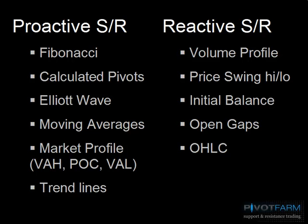At Pivot Farm we have a unique take on support/resistance. We put it into two different camps: the proactive camp and the reactive camp. Reactive support/resistance is based upon core price and volume action — what really happened in the marketplace. This includes things like volume profile, price from highs and lows, initial balance, open gaps, and the open/high/low/close. This is very real information about what price actually did and levels of volume at those particular price points.